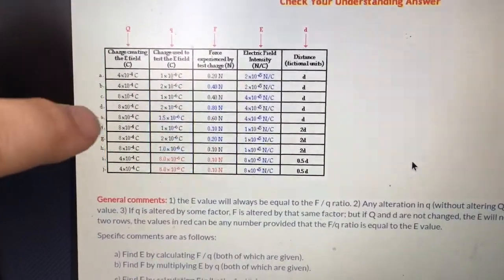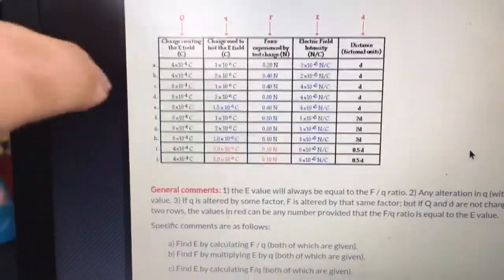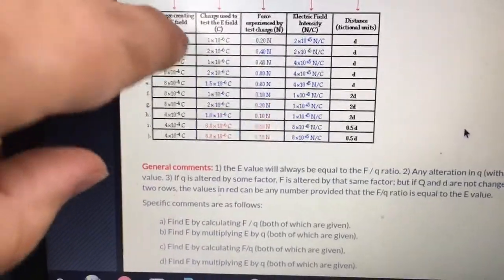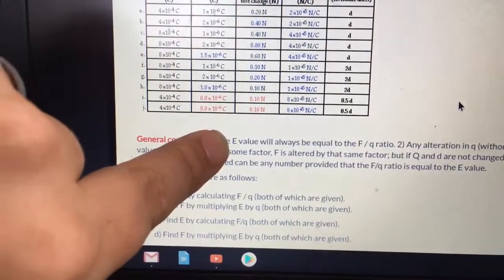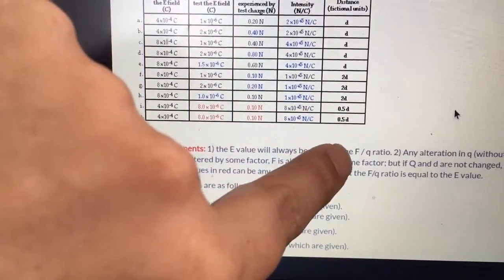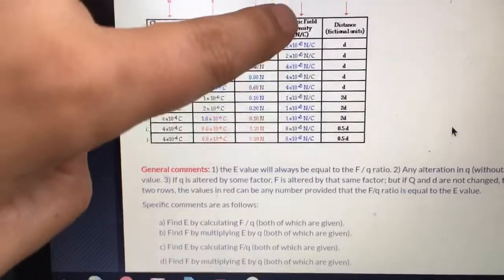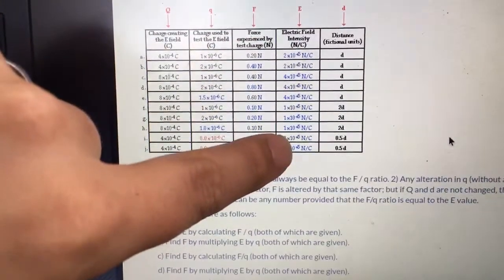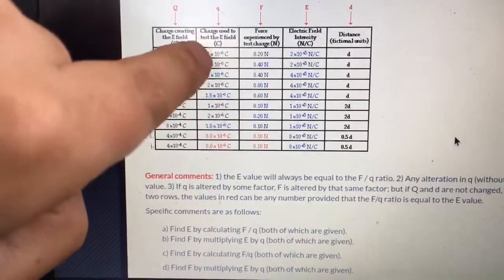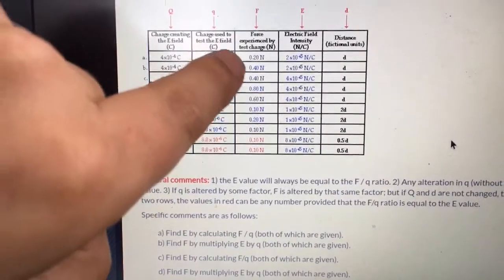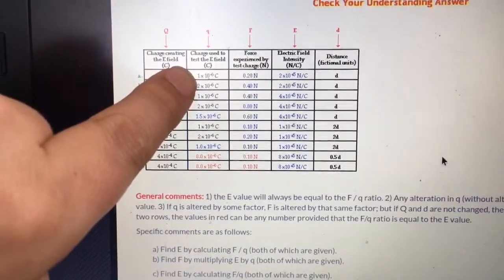The things that are in color here are the things that were blank on your practice. Remember that we can always find the electric field strength by taking the force divided by test charge ratio. So to find this strength or the intensity, we do force divided by test charge. In this case, that'd be 0.2 Newtons divided by 1 times 10 to the minus 6.